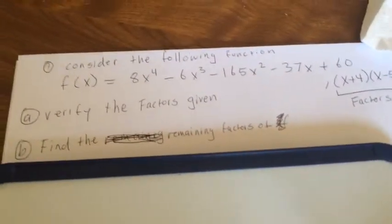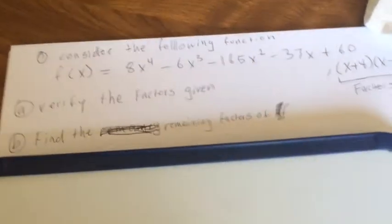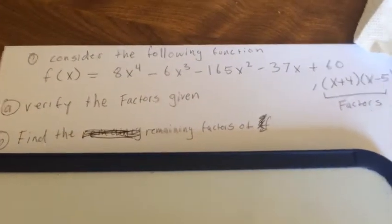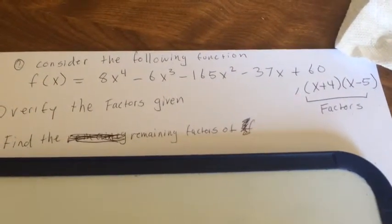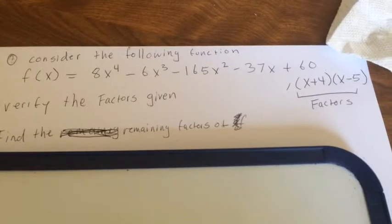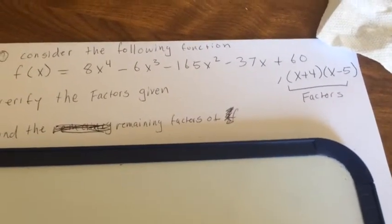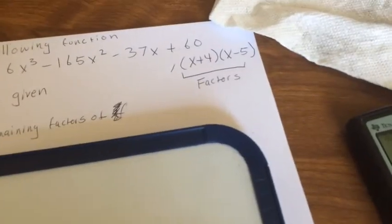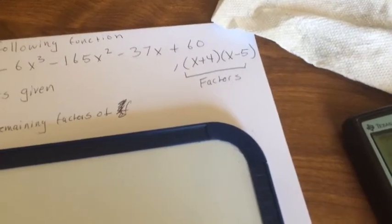Consider the following function: f(x) equals 8x to the 4th minus 6x cubed minus 165x squared minus 37x plus 60. And the given factors are x plus 4 and x minus 5.